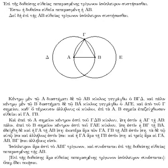Following a period of stagnation after Ptolemy, the period between 250 and 350 AD is sometimes referred to as the Silver Age of Greek mathematics.